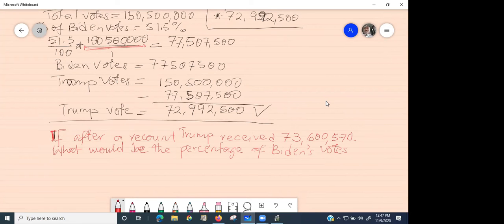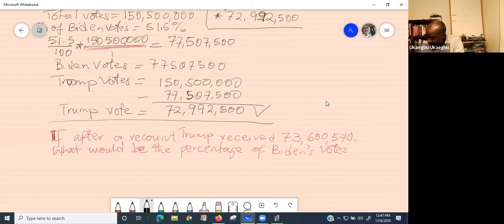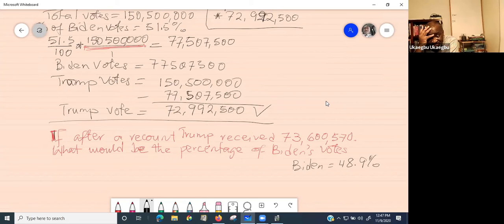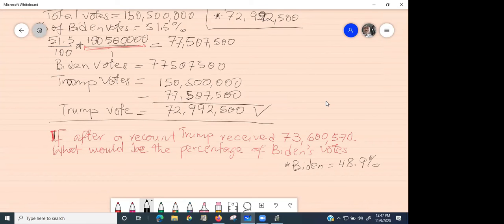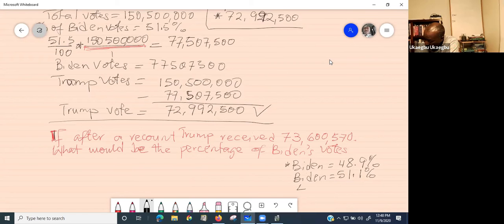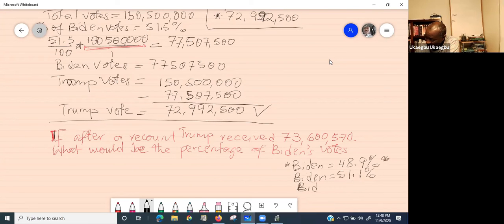I got it. Percentage of Biden's vote is 48.9%. Who got the same thing or something different? I got 51.1%. Who got something else? I got 48.9%, same thing. Any other number outside the one that is already written there? Let's check it out.